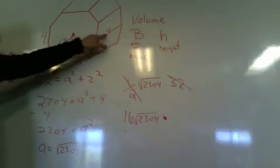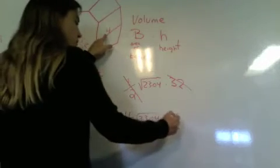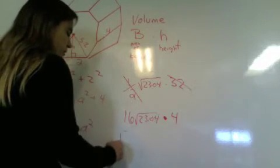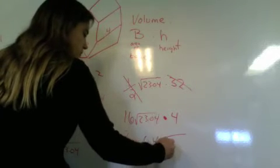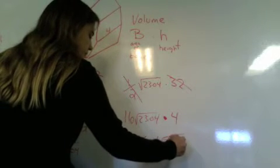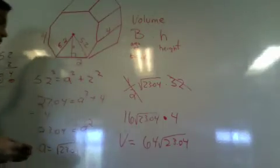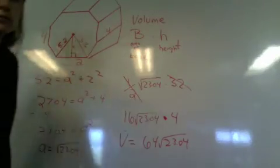And we want to multiply that by the height, which is 4. So then the volume is going to be equal to 64 times the square root of 23.04.